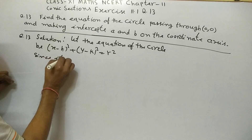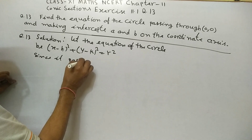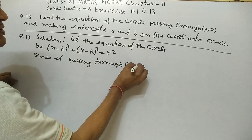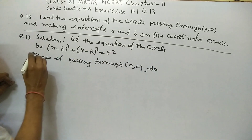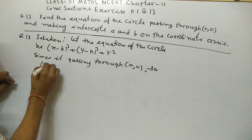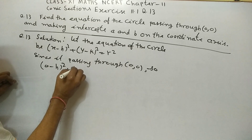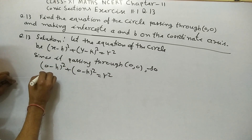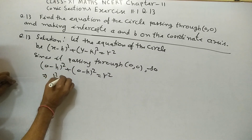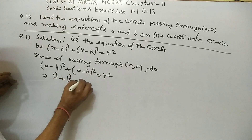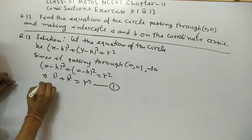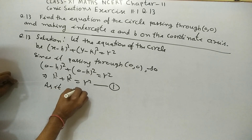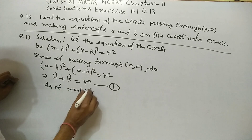Since the circle passes through (0, 0), substituting: (0 - h)² + (0 - k)² = r², which gives h² + k² = r². This is Equation 1.